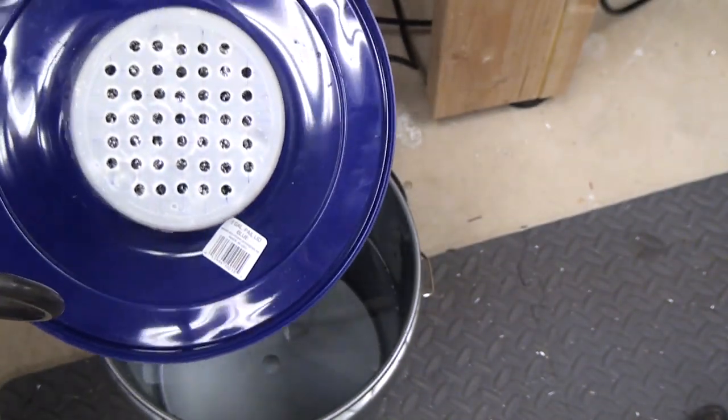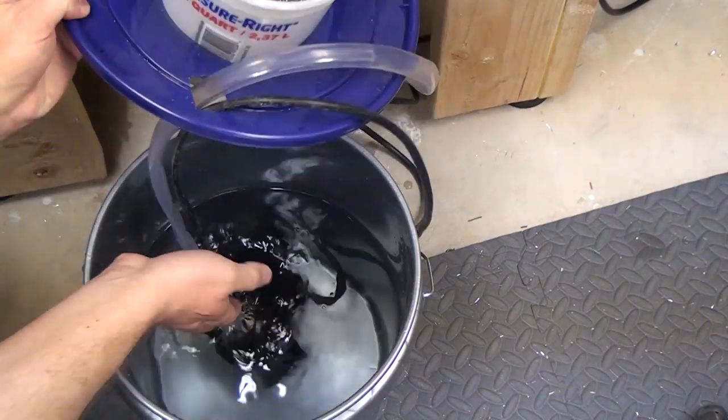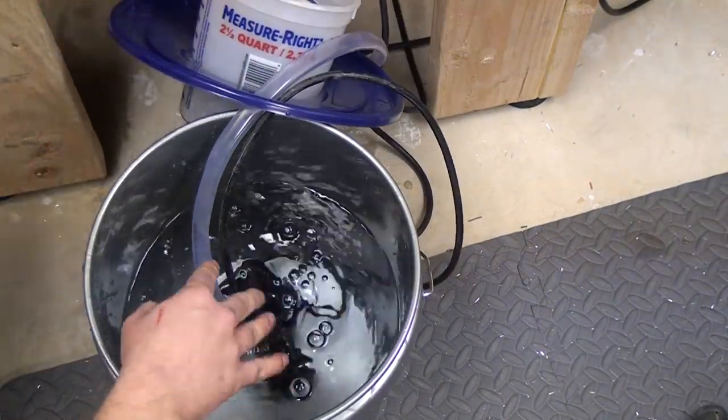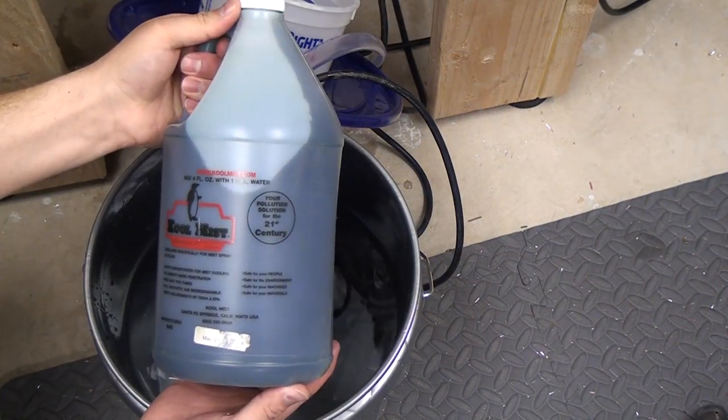This is a 330 gallon per hour pump that was in a koi pond when I bought this house, so I didn't have to buy a pump, but it's not enough pump in my opinion. Eventually I'd like to get more like a thousand gallons per hour.